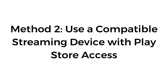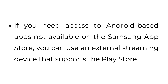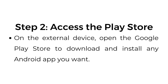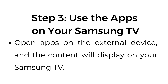Method number two: Use a compatible streaming device with Play Store access. If you need access to Android-based apps not available on the Samsung App Store, you can use an external streaming device that supports the Play Store. Plug in an Amazon Fire Stick, Chromecast with Google TV, or an Android TV box into an HDMI port on your Samsung TV. On the external device, open the Google Play Store to download and install any Android app you want. Open apps on the external device and the content will display on your Samsung TV.